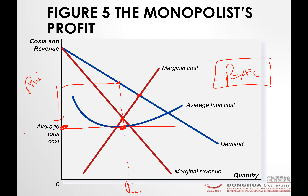There is still a deadweight loss, because you are producing here and your price dropped like this, but you are not producing enough for the society. Plus, the monopolies are not earning any profit either, because price is equal to average total cost.